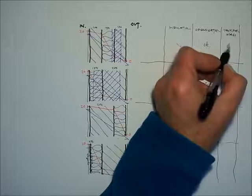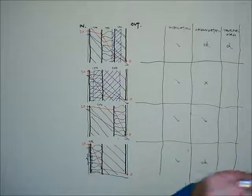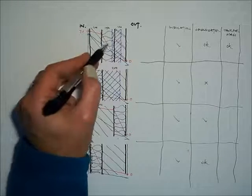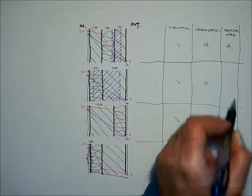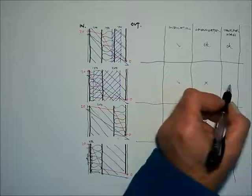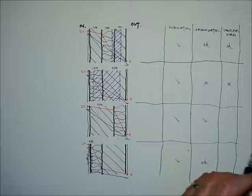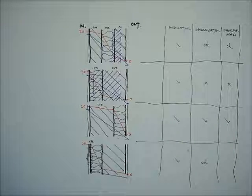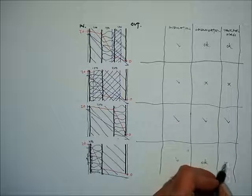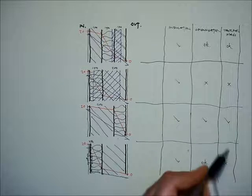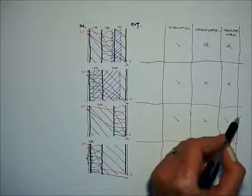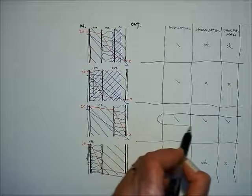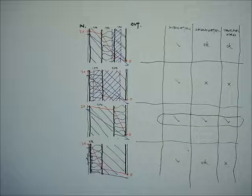This one has an okay thermal mass, there's some masonry on the inside of the insulation. There's no masonry on the inside of the insulation, so this one's no good for thermal mass. This one's great for thermal mass and this one's got no thermal mass. And you can see that the insulation on the outside of the wall is a good solution.